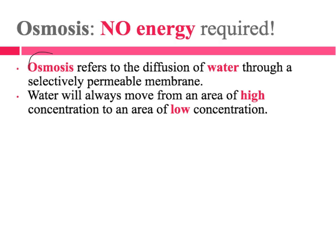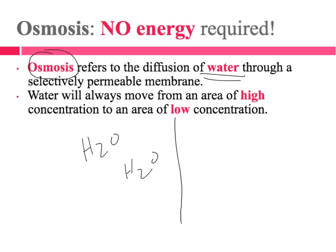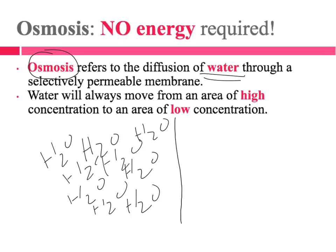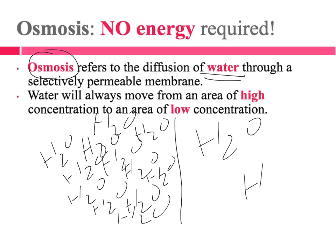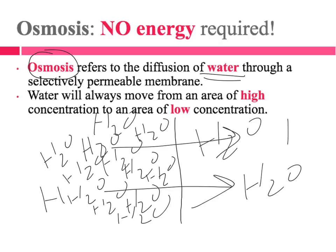This special case involves the diffusion of water through a selectively permeable membrane. Water is always going to go from an area of high concentration to an area of low concentration. Here's our semi-permeable membrane — lots of water molecules on one side, only a few water molecules on the other. Water is going to diffuse from where there's more of it to where there is less of it, from high to low, and that occurs naturally with no energy required.